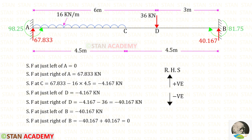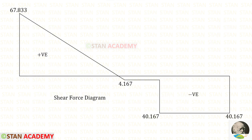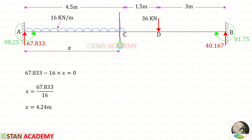Now let us find the shear force values from point A, following the right hand side rule — upwards is positive and downwards is negative. Using the shear force values we can draw the shear force diagram. At one point the shear force becomes 0, and at that point there will be the maximum positive bending moment. Let us make a section at that point at a distance X from point A. Since the shear force is 0 at this section, we can find X, which gives us 4.24 meters.